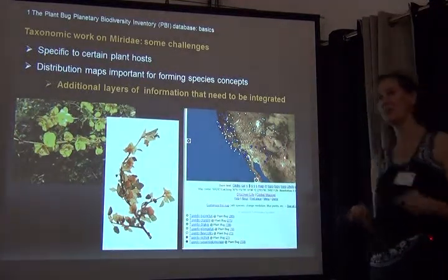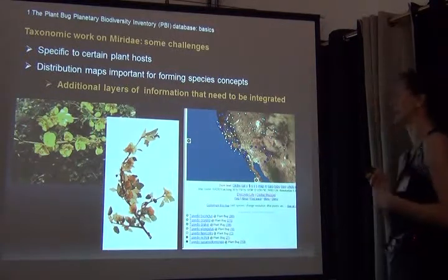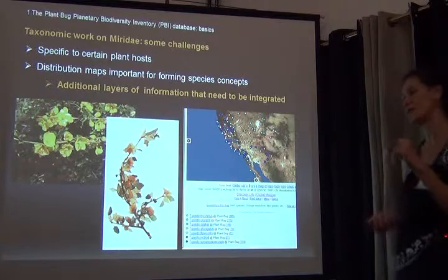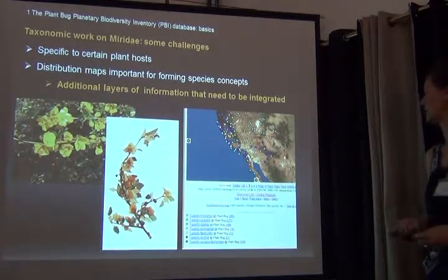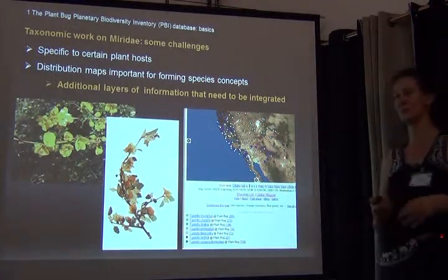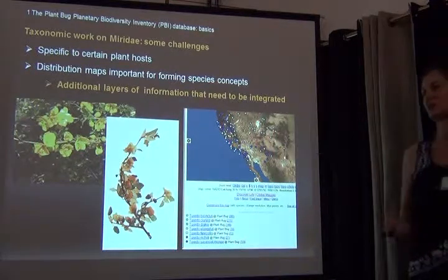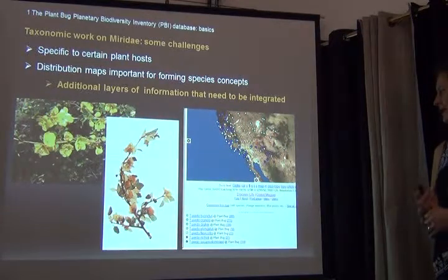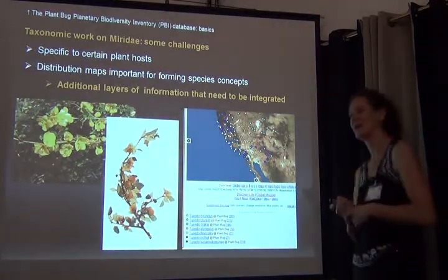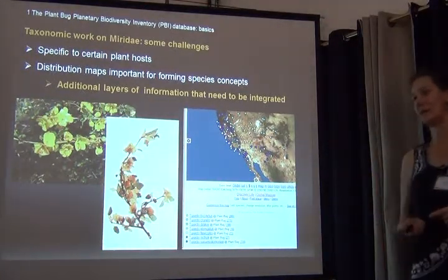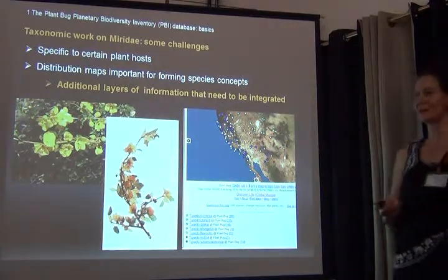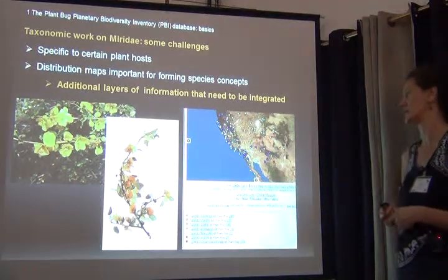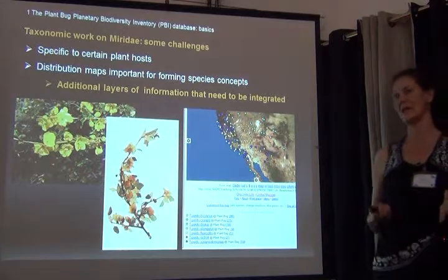One other thing had a huge impact on what we decided to do: for taxonomic work on Miridae, plant host associations are really, really important, because a lot of these insects are very specific to only maybe one species of plant, or species within a given genus of plants. One of the goals of this project was to look into these insect-plant species associations, to track them and map them as correctly as possible. As early as 2003, this made us look critically at the available database options, and we decided none of them really worked well for what we were trying to do.